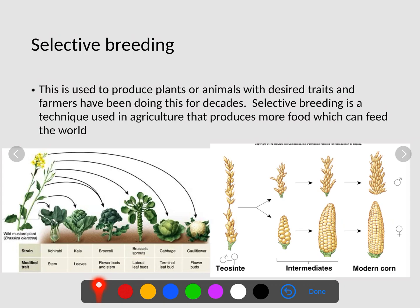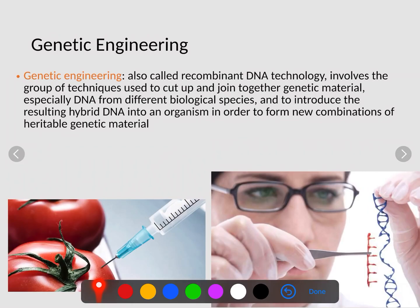Another thing that has been selectively bred is wild mustard. Wild mustard has been selectively bred over millions of years to produce a lot of things: kale, broccoli, brussels sprouts, cabbage, and cauliflower. Each one has been bred for a particular thing — kale for the leaves, broccoli for the flowers and the buds, brussels sprouts for the lateral leaf buds, cabbage for the terminal leaf bud, and cauliflower for the flower bud. They selectively bred different parts to get a different vegetable.